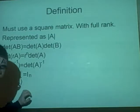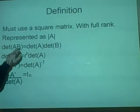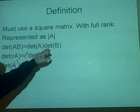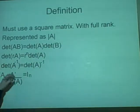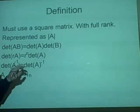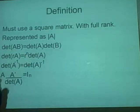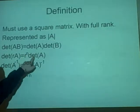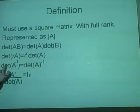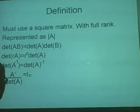We have a few rules. The determinant of AB is the determinant of A times the determinant of B. The determinant of rA, where r is a scalar, equals r to the N times determinant A. The determinant of A inverse is the determinant of A inversed.